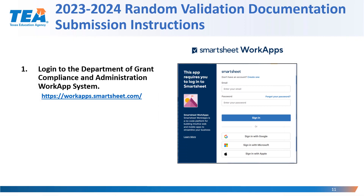To begin the documentation submission process, the person with access will want to log in to the Department of Grant Compliance and Administration Smart Sheet WorkApp. The login page is shown on the right of the screen, where the person with access will need to enter their email address and password to gain access to the Federal Program Compliance Division Random Validation WorkApp.